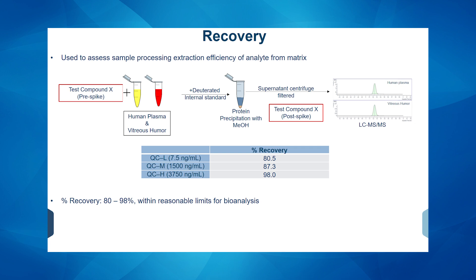Moving on to recovery — when we perform an extraction in a sample preparation step, it's very important to evaluate recovery of your method. We spiked test compound X in both human plasma and vitreous humor, conducted sample preparation using internal standard and protein precipitation, and analyzed it. This was compared to a sample where extraction was performed without the test compound, and then test compound X was spiked post-extraction before LC-MS/MS analysis. The response from the pre-spike and post-spike samples were compared, and our recovery ranged from 80 to 98 percent, which is within reasonable limits of bioanalysis.